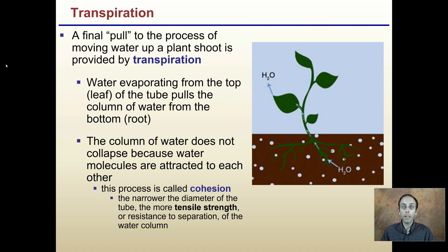Now this transpiration, how does this relate to this final transpiration process? The final pull is the process of moving water up the plant shoot. Water evaporating from the tops of the leaves is the tube that pulls the column of water through the bottom roots. The column of water does not collapse because water molecules are attracted to each other, the process called cohesion. The narrower the diameter of the tube, the more tensile strength that will occur or resistance to separation of the water column, and that will help move that water up through the plant.